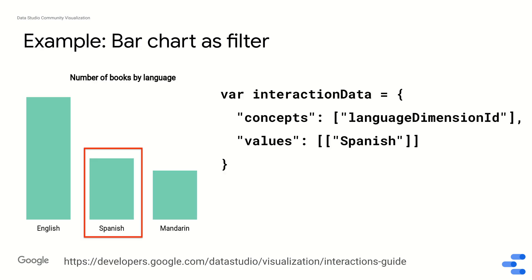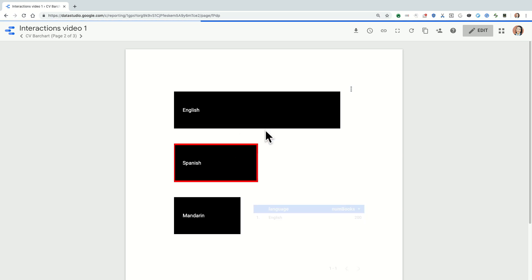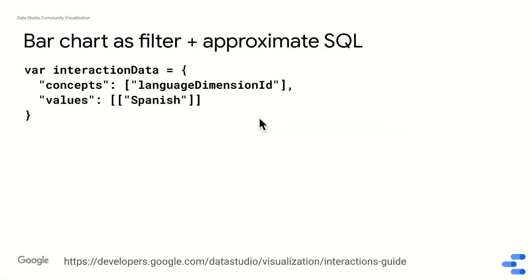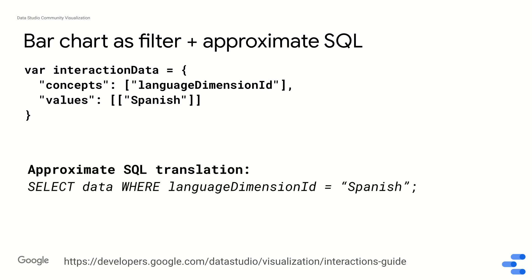To make this more concrete, let's look at that bar chart again. When clicking on one bar, my interaction data will have concepts set to the language dimension ID — the field ID associated with the dimension I care about — and values set to Spanish. That's the interaction data I send to Data Studio, essentially telling it to filter by Spanish language books. The approximate SQL translation looks like: SELECT data WHERE language_dimension_ID = 'Spanish' — that's basically what you're telling Data Studio so it can filter the rest of the dashboard.